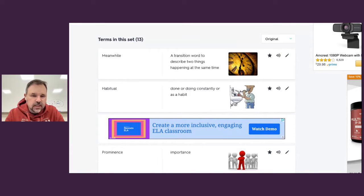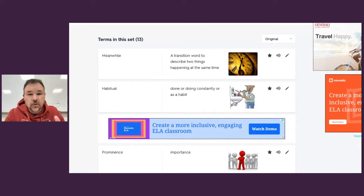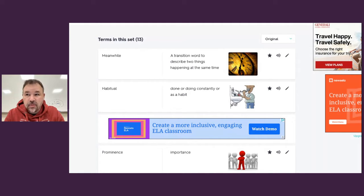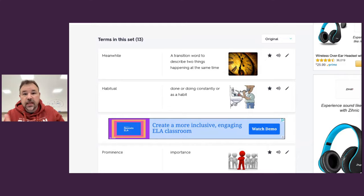The first one is meanwhile. Meanwhile, and this is a good one to know because authors will often use it when two things are happening at the same time. So, let's say you have a brother and a sister. The brother is eating dinner. Meanwhile, the sister is practicing her flute. So two things happening at the same time, and they're often not happening in the same room.